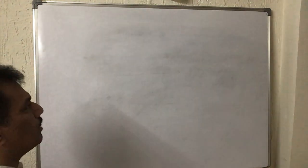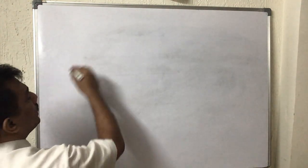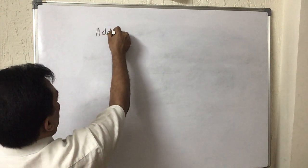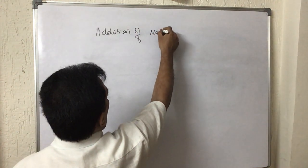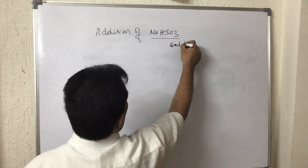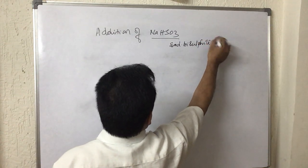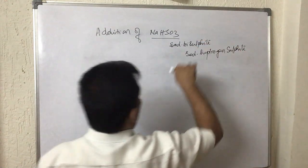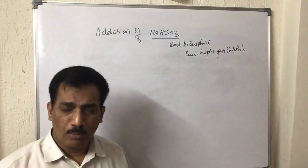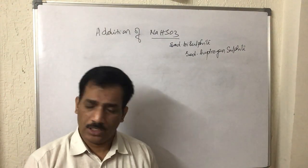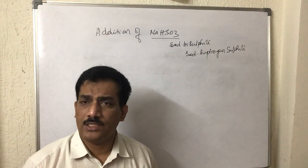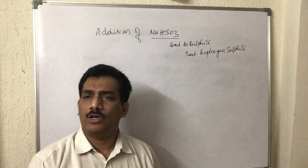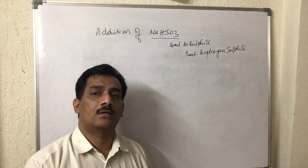Let us discuss the addition reaction of sodium bisulphite with carbonyl compound. Sodium bisulphite — sometimes also called sodium hydrogen sulfite — both names refer to the same compound. Sodium bisulphite addition with a carbonyl compound forms white crystalline solids. Any carbonyl compound, when it reacts with sodium bisulphite, forms white crystalline solids which are readily soluble in water — water-soluble white crystalline compounds.